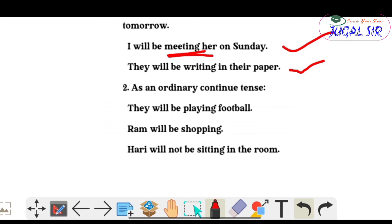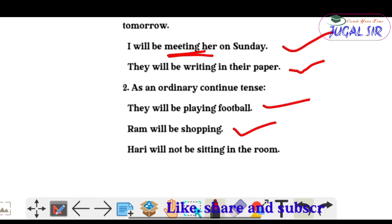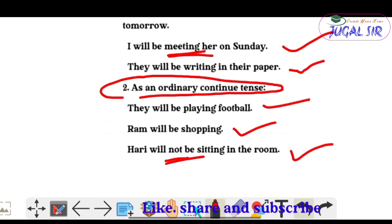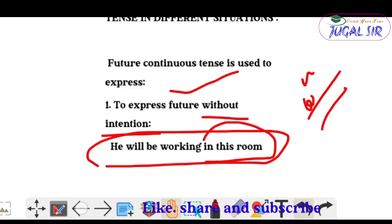The second use: as an ordinary continuous tense — when talking about something ordinarily as a continuous action in the future. Examples: 'They will be playing football', 'Ram will be shopping', 'You will not be sitting in the room' — this can also be used in negative sentences. This is the second use: to express as an ordinary continuous tense.